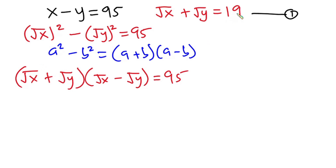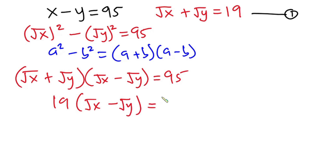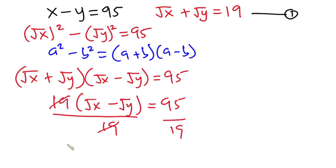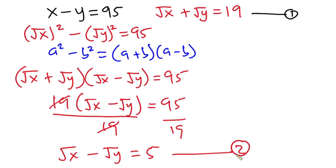Now, square root of x plus square root of y appears here, and from equation 1 we know that equals 19. So I'll substitute 19 in: 19 times (square root of x minus square root of y) equals 95. Dividing each side by 19, we get square root of x minus square root of y equals 5. I'll call this equation 2.